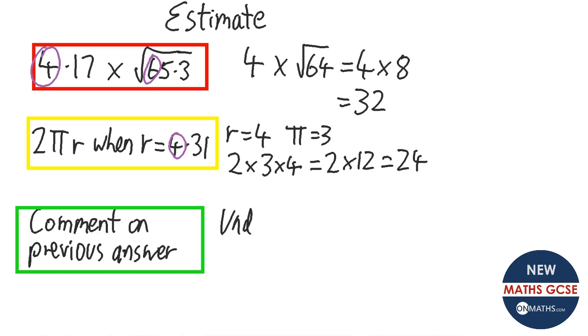And we rounded the r down, and we rounded pi down. So again, a sentence that involves the word underestimate. So you would say that we rounded r down, and we rounded pi down. Therefore, our answer is going to be an underestimate.